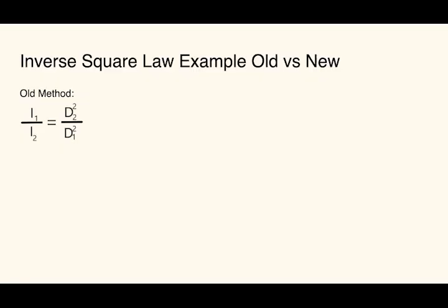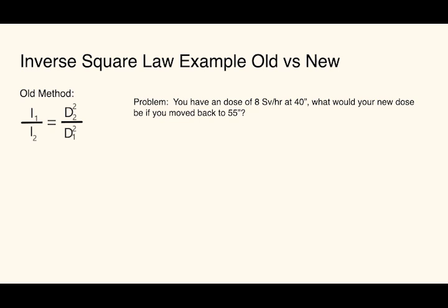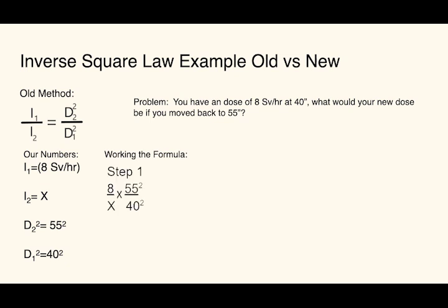So we're going to look at the old formula first. So as you can see the old formula up here, you have a very easy word problem. Let's say you have 8 sieverts per hour at 40 inches. So what would your new dose be at 55 inches? So the first thing we're going to do is identify our formula and look at all the values for each part. So in the formula, step one is you plug in your numbers. Step two, you square the distances.